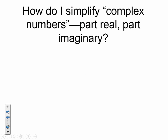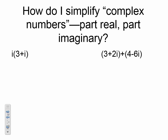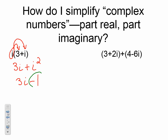Now we're going to simplify complex numbers. Here's the first example: i times the quantity (3 + i). Using the distributive property, we take i times 3 and i times i, giving us 3i plus i squared. We know i squared equals negative 1, so we get 3i minus 1. Writing our numbers first, the proper form is negative 1 plus 3i. That is our simplified answer.